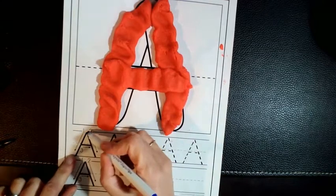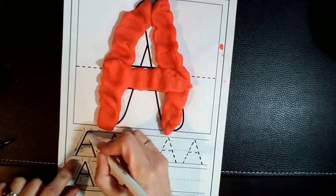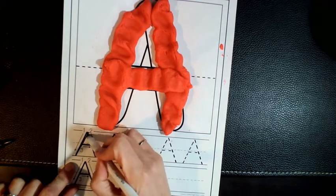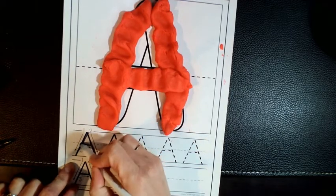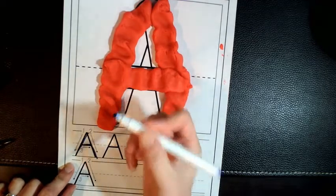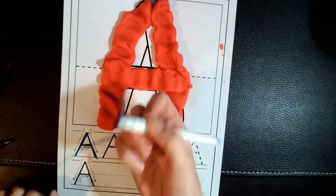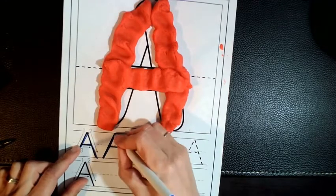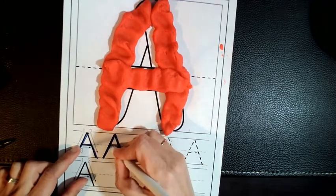So we're going to practice by tracing this one first. Start at the top, big line down, frog jump up, line down, and little line across. I'm looking for a nice good pencil grasp. Line down, frog jump up, line down, and across.